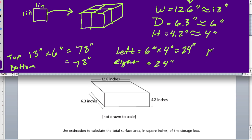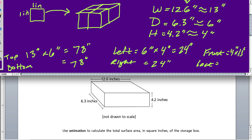And now we have the front and the back. Well, the front is just 4.2 by 12.6, or 4 by 13. 4 inches times 13 inches. And 4 times 13 is 52, so the front and back are both equal to 52 inches.